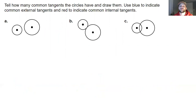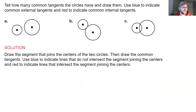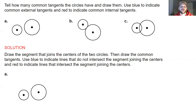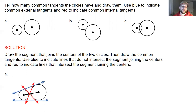Now we will determine how many common tangents each pair of circles has and draw them, using blue for common external tangents and red for common internal tangents. In part A, the two circles are not intersecting. Drawing a segment joining their centers and then drawing tangent lines: the red internal tangents each intersect the left and right circles at one point individually, and the blue external tangents cross both circles. Part A has four common tangent lines total.